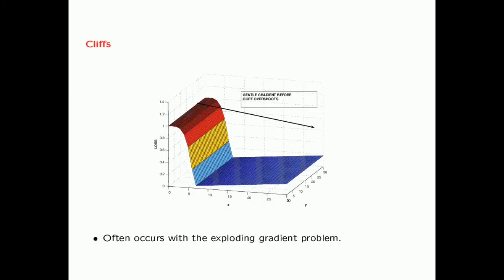Cliffs also cause a problem for gradient descent because if you take very small steps, you don't move at all. But if you take a very large step, this type of overshooting can occur, which makes convergence more difficult.